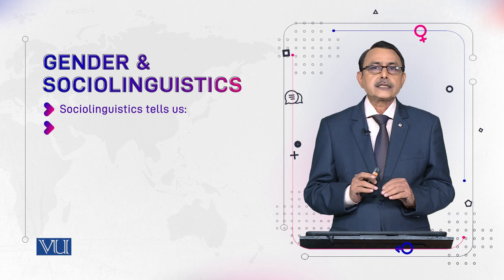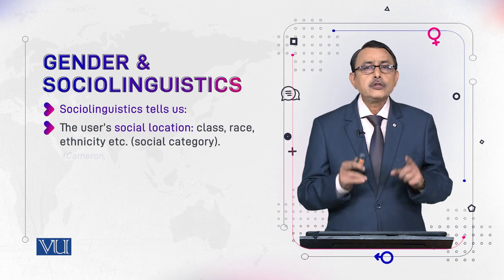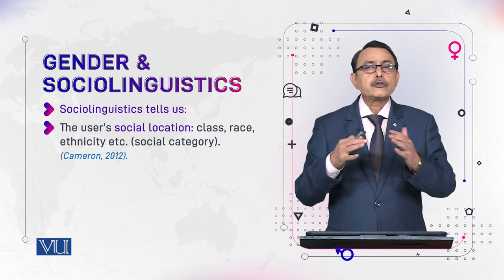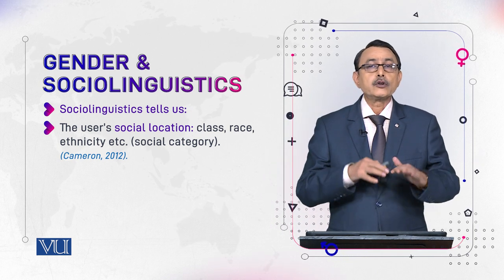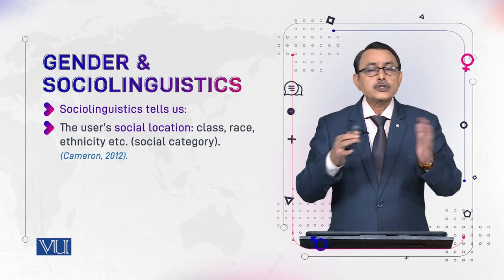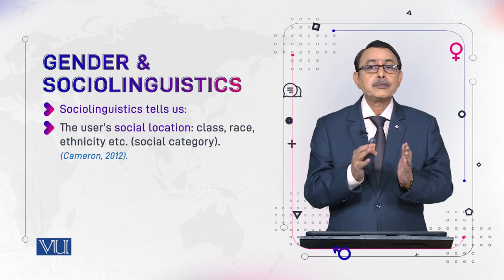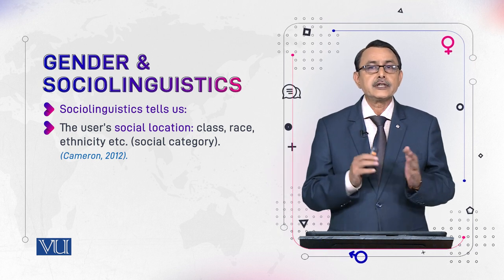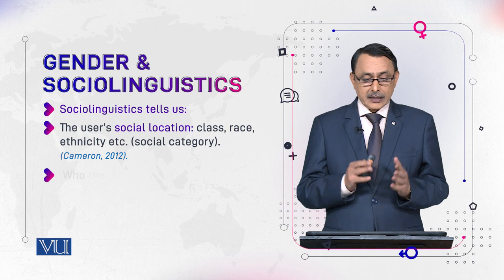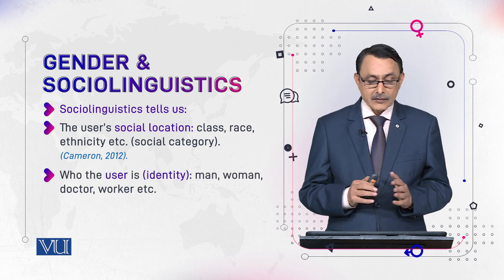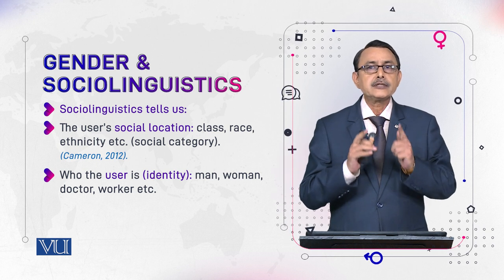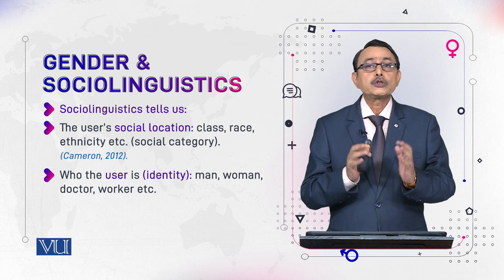Sociolinguistics tells us particularly about the user's social location. Here location does not mean geographical location — it is cultural and social location, where that person stands in society with reference to class, gender, colour, etc. This is the user's social category.